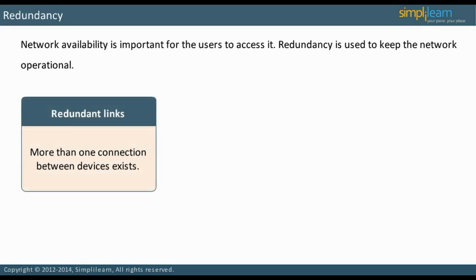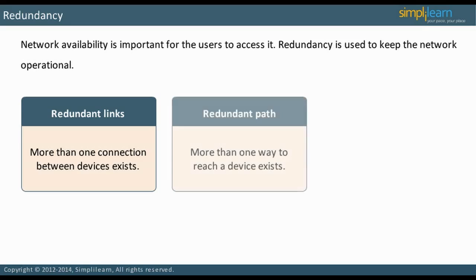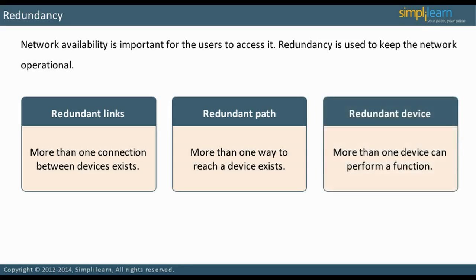The first type is redundant links, meaning there is more than one connection between devices, such as EtherChannel. Redundancy is also provided by redundant paths — this is when there is more than one way to reach a device. A device can have more than one interface through which it can receive packets from another device. There is also redundancy in the form of redundant devices.